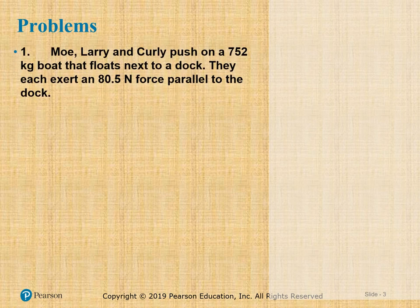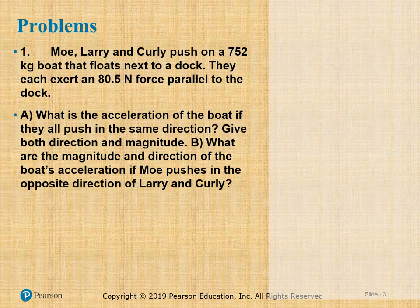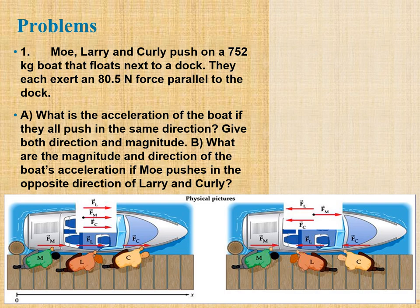Let's look at the problem: Moe, Larry, and Curly push on a 752-kilogram boat that floats next to a dock. They each exert an 80.5-newton force parallel to the dock. Part a: what is the acceleration of the boat if they all push in the same direction, giving both direction and magnitude? Part b: what are the magnitude and direction of the boat's acceleration if Moe pushes in the opposite direction of Larry and Curly?